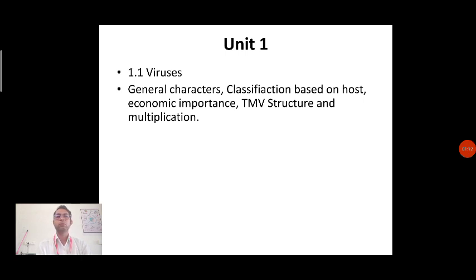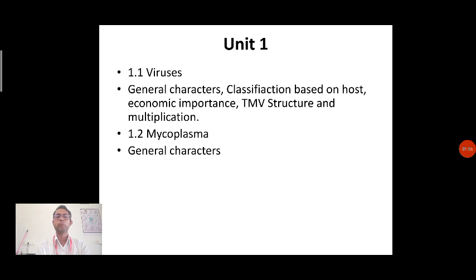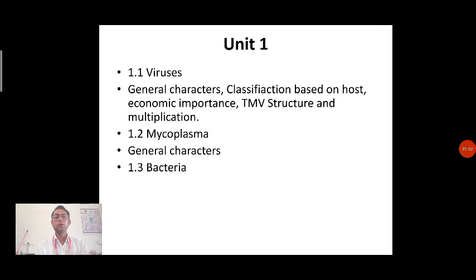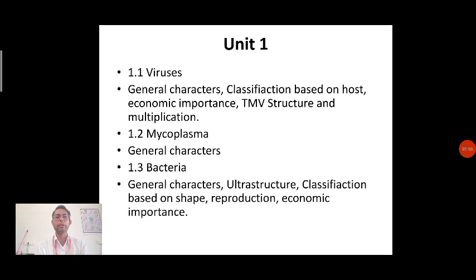When we look at unit number one of this paper, we can see the inclusion of viruses — general characteristics, classification based on economic importance and host. We are also going to concentrate on the structure of tobacco mosaic virus and its multiplication. Not only viruses, but mycoplasma is also included in unit number one.